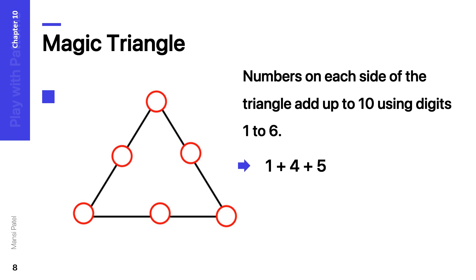The sum of each side is 10, and you have to use the digits 1 to 6 only. So here you have to make pairs whose sum is 10: 1 plus 4 is 5, and 5 plus 5 is 10. In the second pair, 1 plus 6 is 7, and 7 plus 3 is 10. The number common in both pairs — which is 1 — you write at the top. Then arrange one number on the left-hand side and one on the right-hand side. We write 1, 4, 5 on one side and 1, 6, 3 on the other. For the middle bottom number: 5 plus 3 is 8, and 8 plus 2 is 10, so the number 2 goes in the middle. This is your magic triangle.